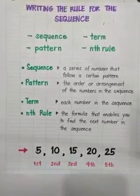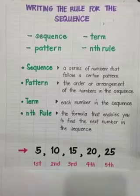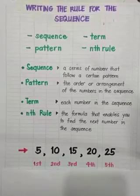The number 5 is our first term. The number 10 is the second term. 15 is the third. 20 is the fourth. And 25 is the fifth term. So again, the word term means the number in the sequence.